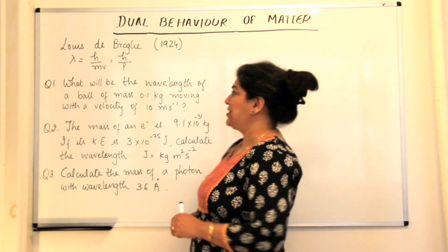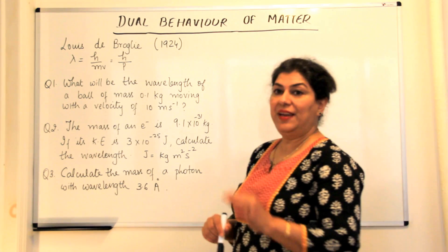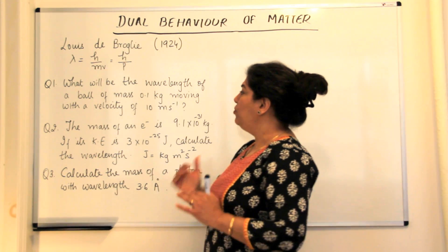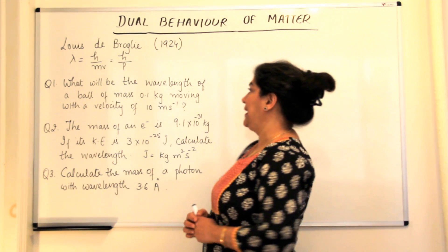So let us solve the first question. What will be the wavelength of a ball of mass 0.1 kg moving with a velocity of 10 meters per second?